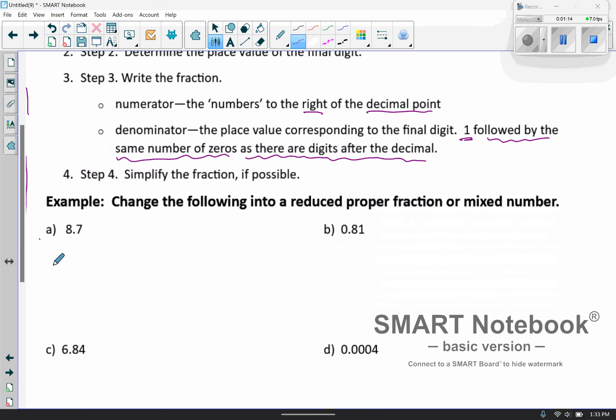So looking at this first one, we have 8.7. We do have a whole number to the left of our decimal, so we're going to be looking at a mixed number. So we're first going to write the eight. And then now we're going to have our fraction. The fraction's numerator is just the number to the right of the decimal. That's pretty easy.